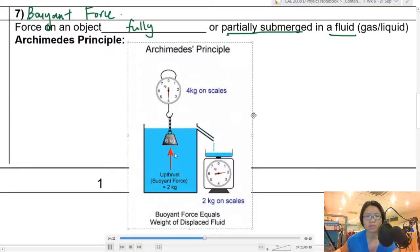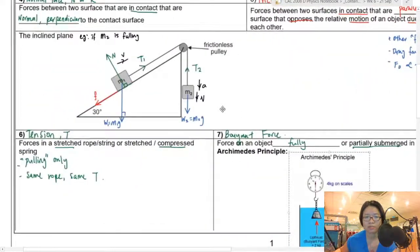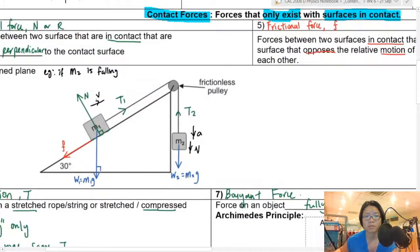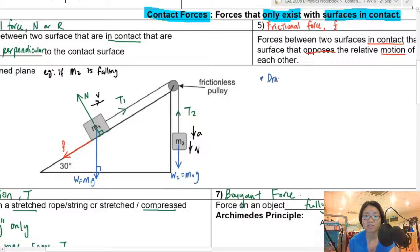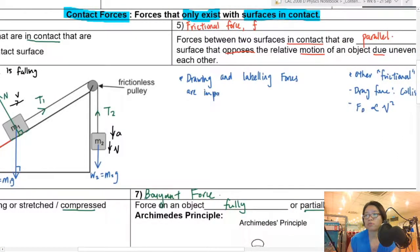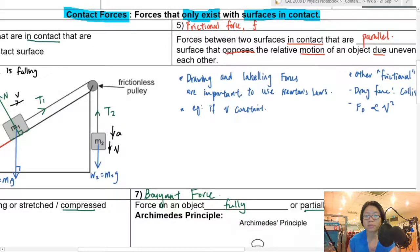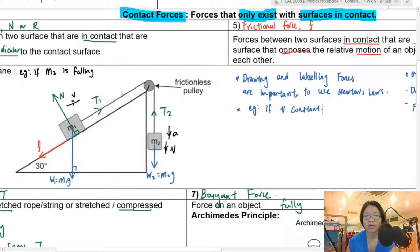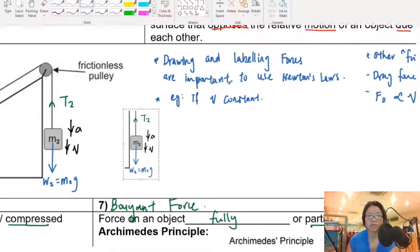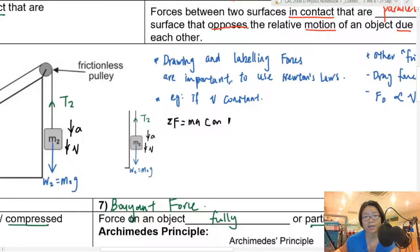Archimedes describes the floating force you feel when you're in water. I want to focus more on the inclined plane in this video, because it's a very famous physics example — it teaches you how to draw and label forces. If you don't draw and label forces, you can't use Newton's second law. For example, if velocity V is constant, I'm going to consider the forces acting only on M2 first. Using F = MA — Newton's second law — just on M2 alone.